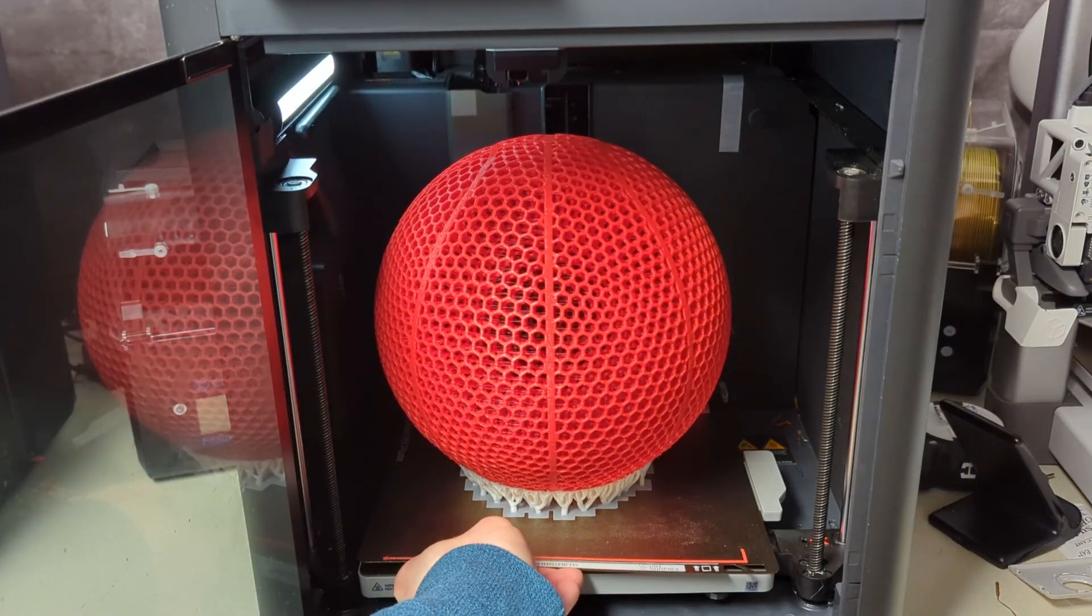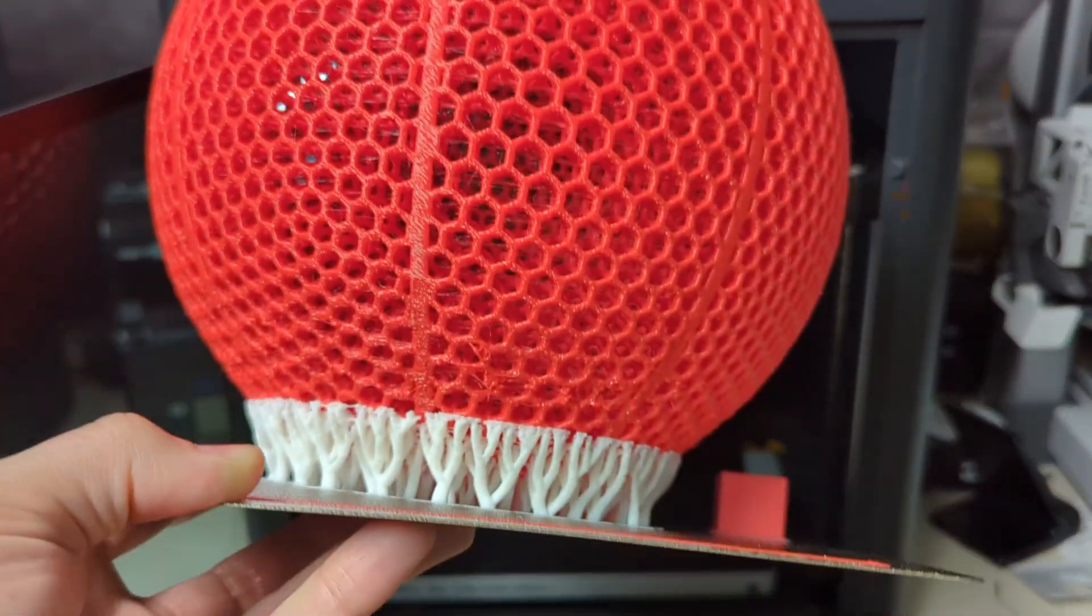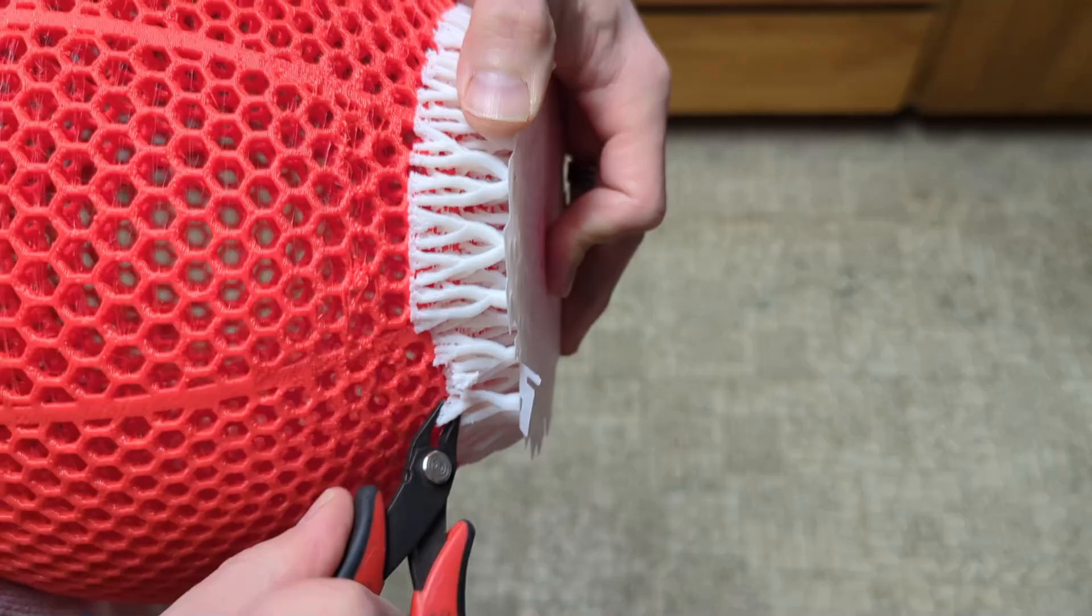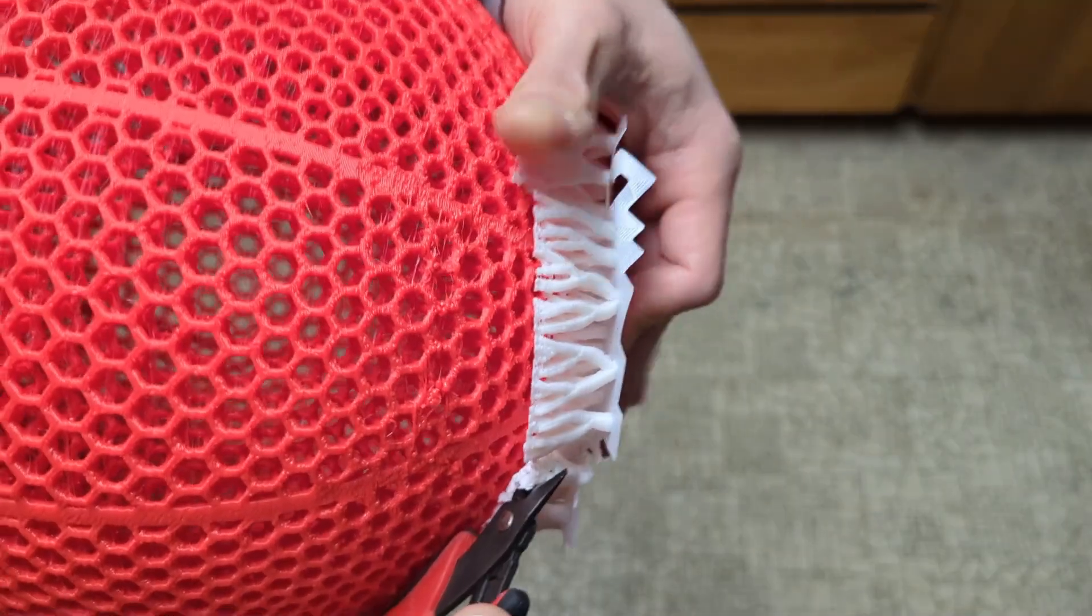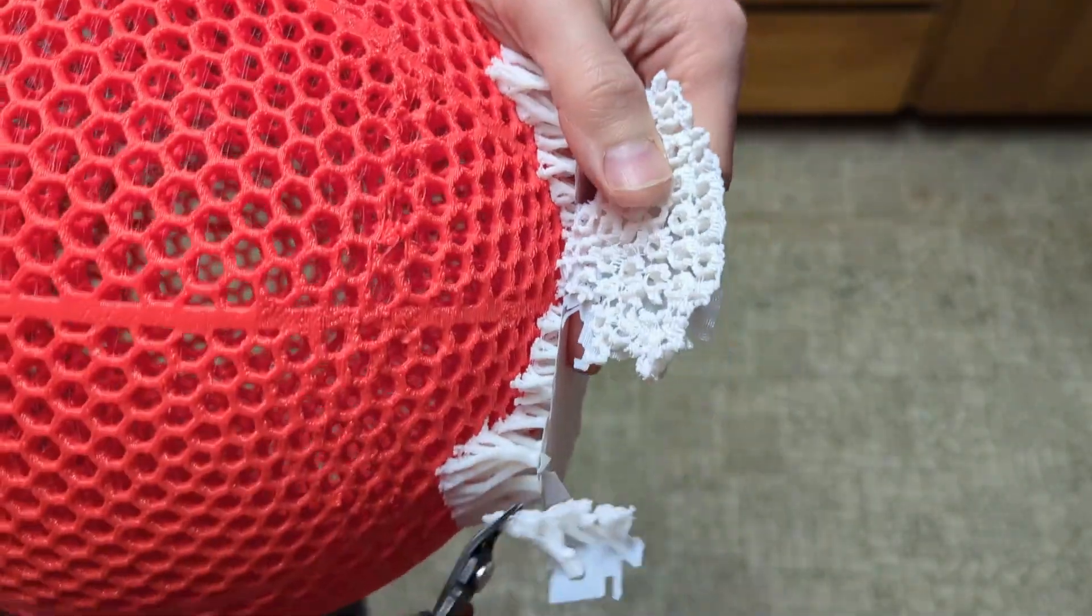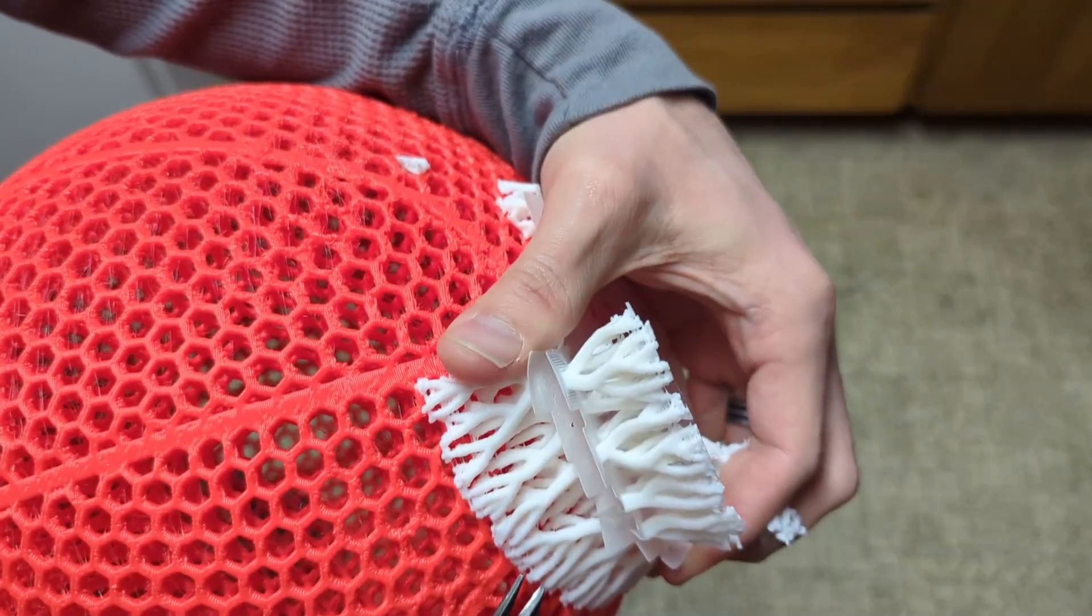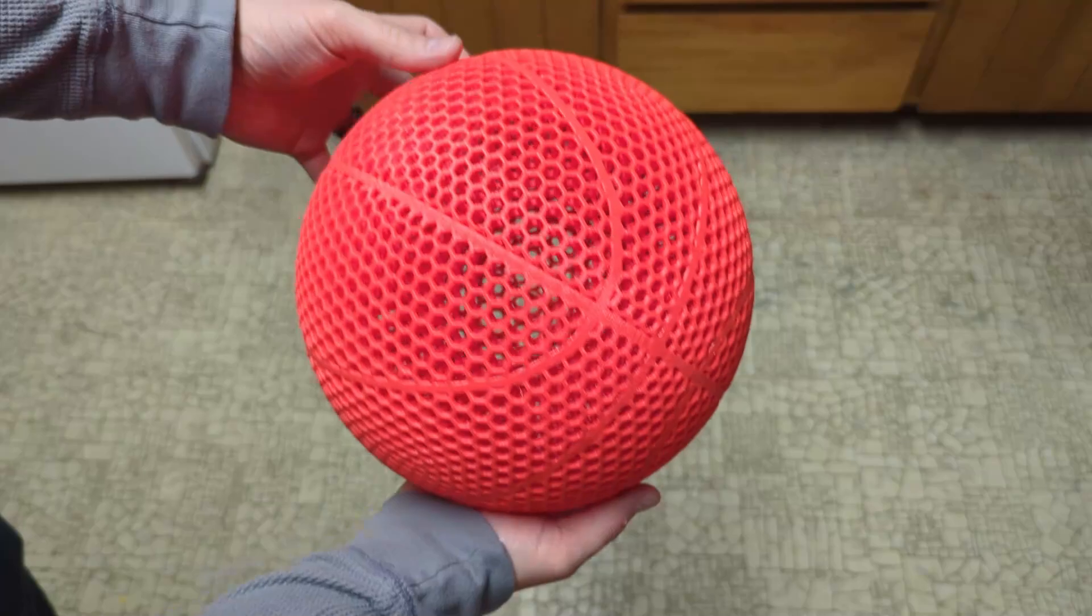Now that it was fully printed, it's time to see how easy those PLA supports detach from the TPU basketball. It was a bit difficult to get the removal of the PLA support started, but once I was able to wedge the flush cutters underneath the PLA supports and pry up, it started coming off in chunks. And I gotta say it was actually very satisfying to remove. This last little bit I was able to remove all of it at the same time and yeah, it was very satisfying.